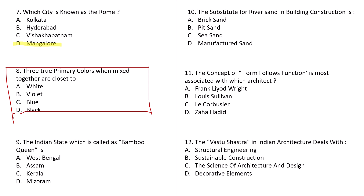Question number 9: The Indian state which is called the 'Bamboo Queen' is: A: West Bengal, B: Assam, C: Kerala, D: Mizoram. The answer is D — Mizoram is known as the Bamboo Queen. Question number 10: The substitute for river sand in building construction is: A: Brick sand, B: Pit sand, C: Sea sand, D: Manufactured sand. The correct answer is D — Manufactured sand.